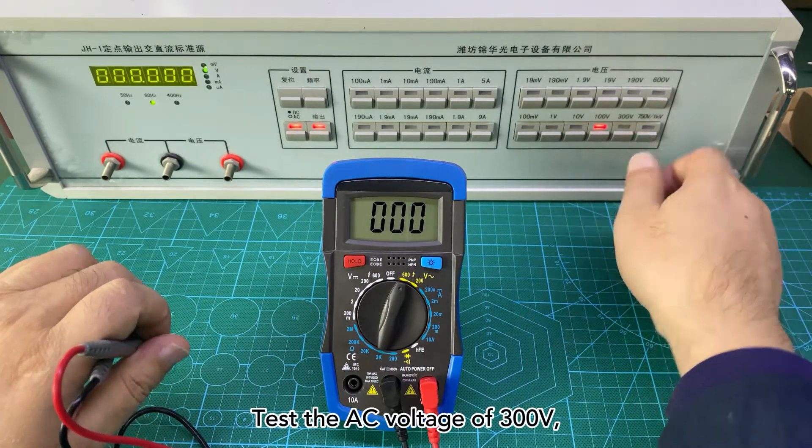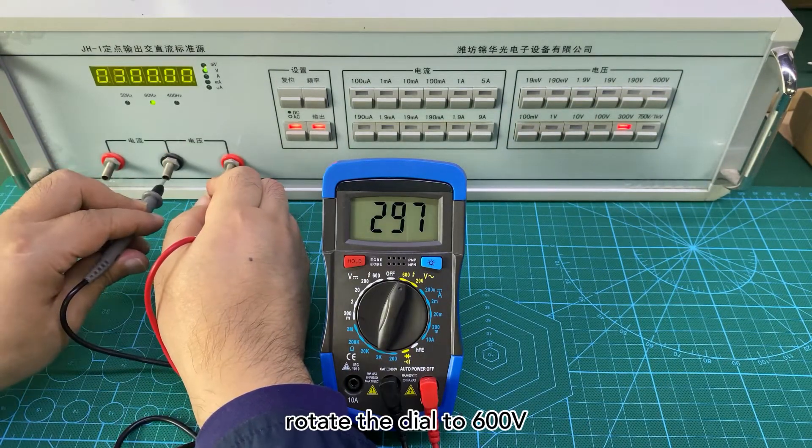Test the AC voltage of 300V. Rotate the dial to 600V.